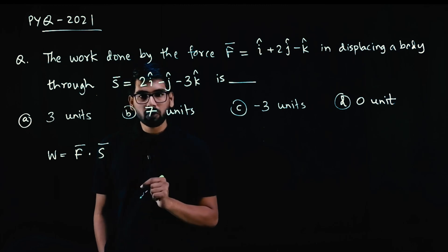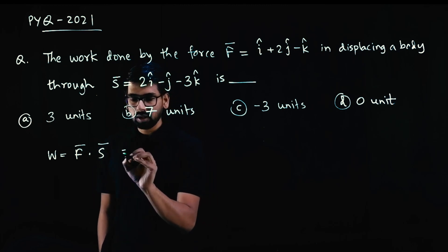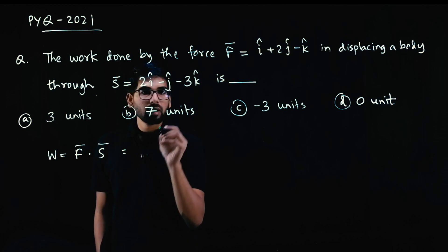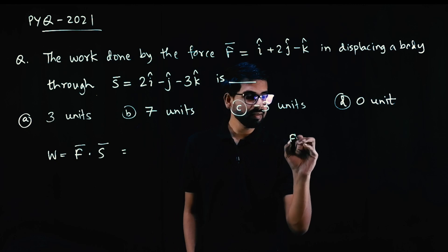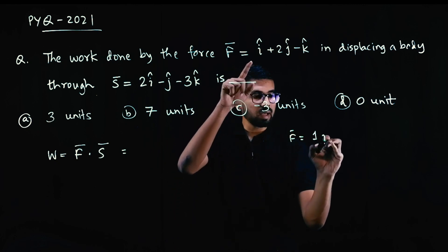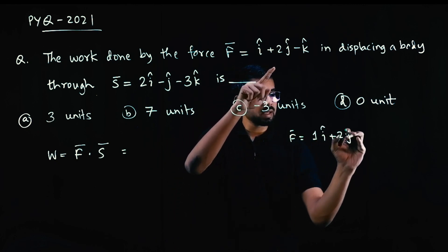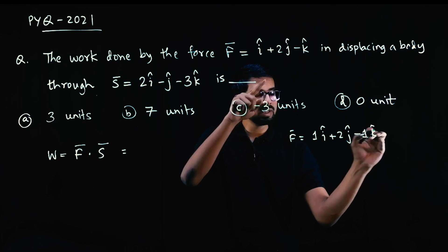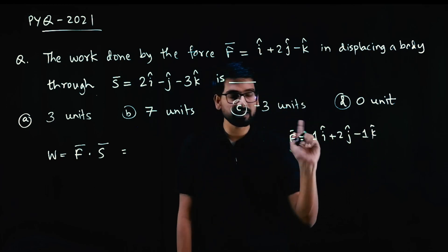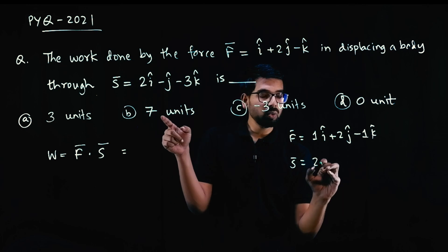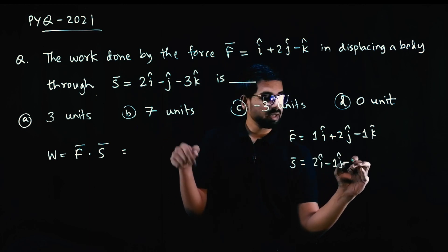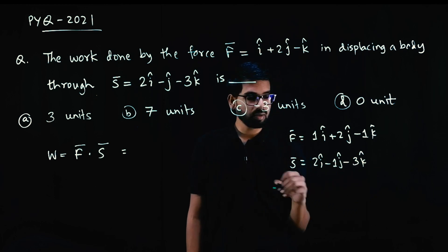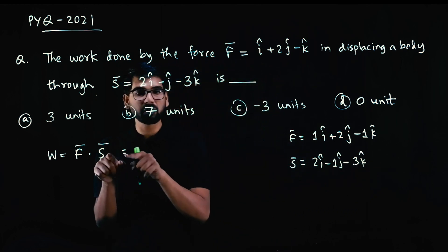How do you take dot product of two vectors? F bar is 1i cap plus 2j cap minus 1k cap. S bar is 2i cap minus 1j cap minus 3k cap. F bar dot S bar.